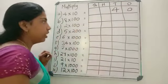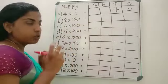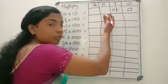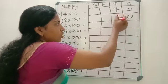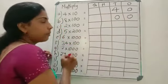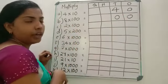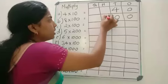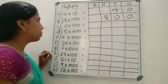Next question: 8 into 100. How many zeros are here? 2 zeros. So start writing from the 1's place — 2 zeros. Then 8 into 1 is 8. Write that in the next place, which is the 100's place.